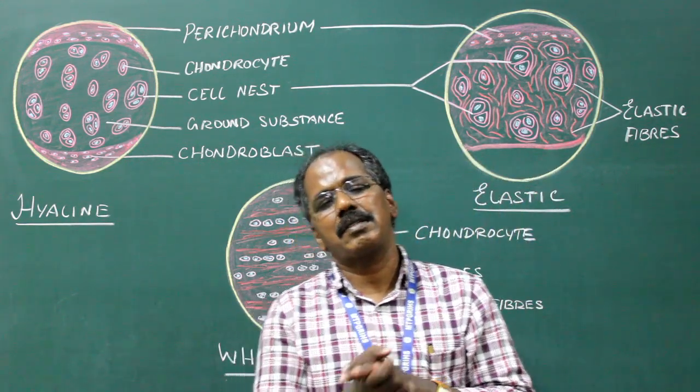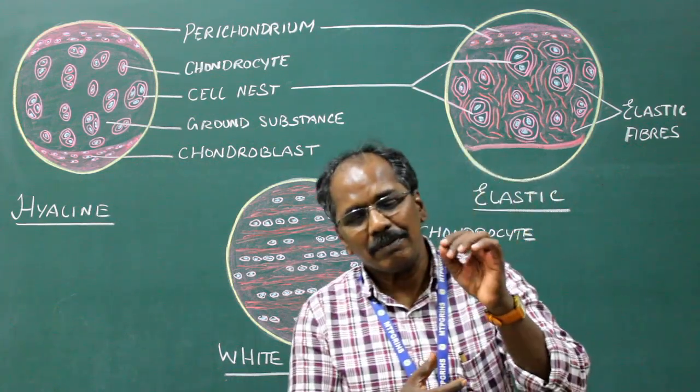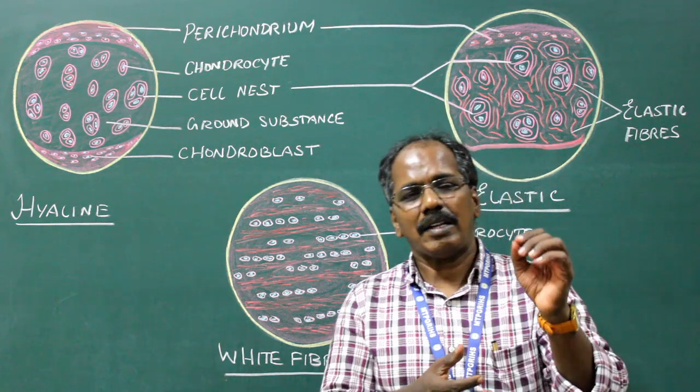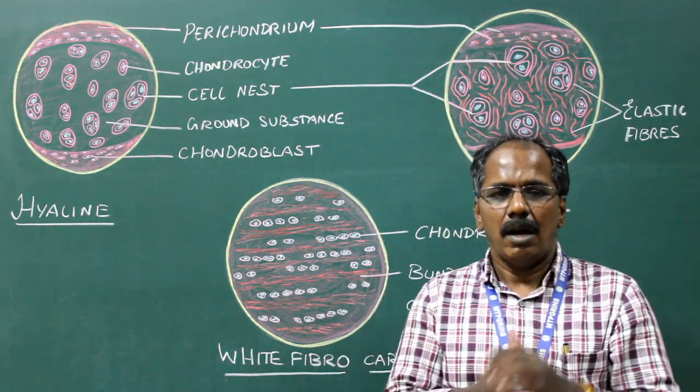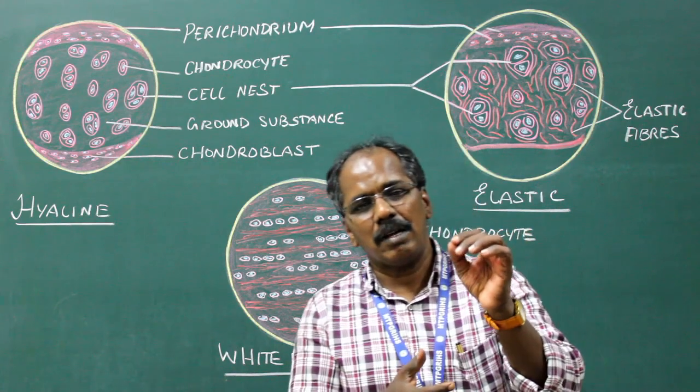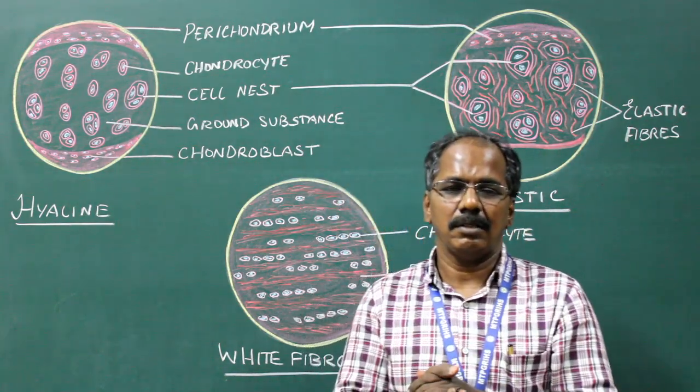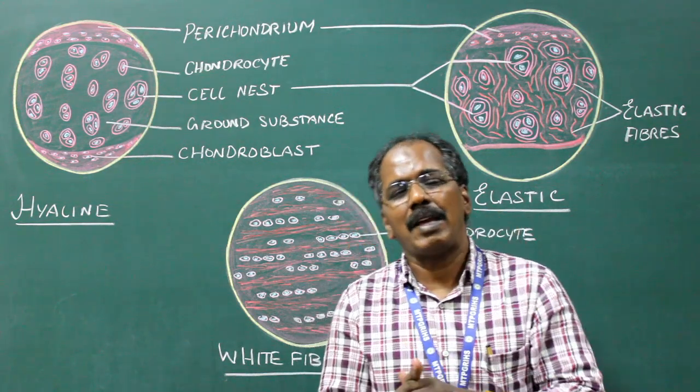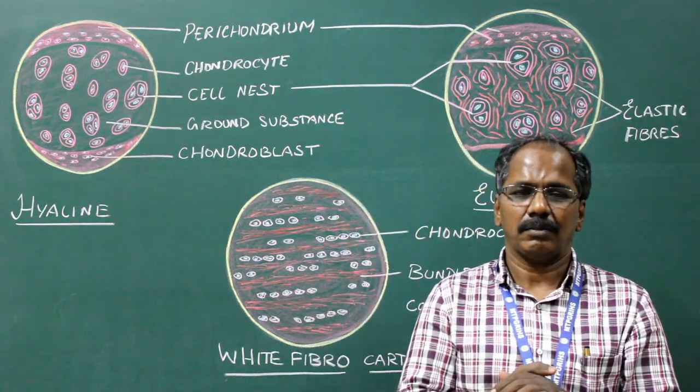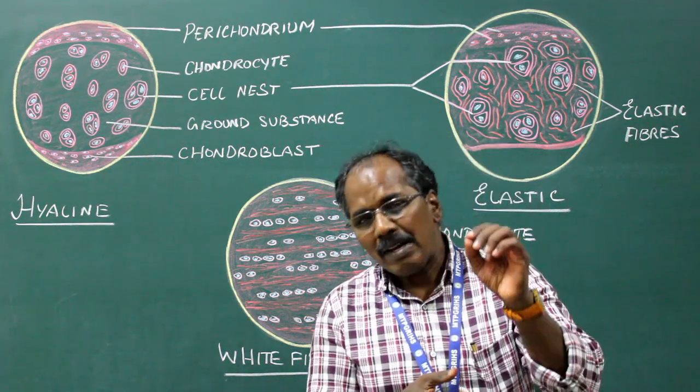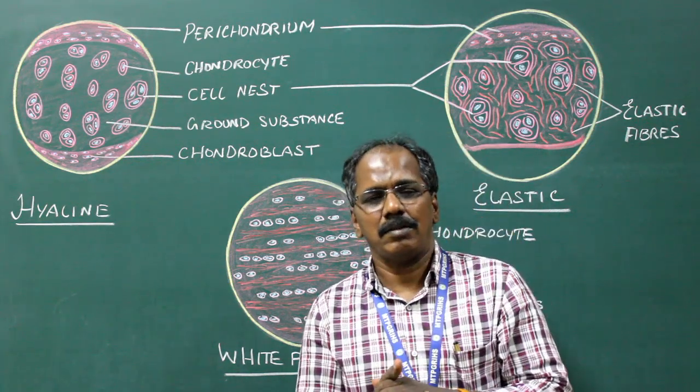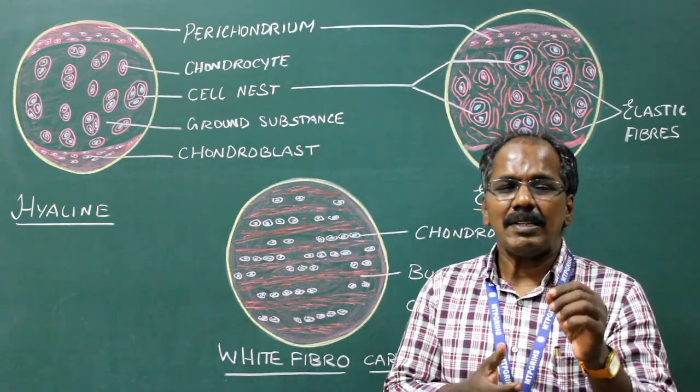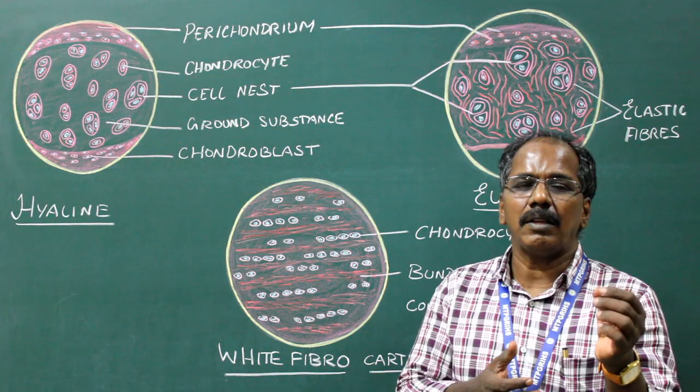General features: Cartilage is derived from mesoderm. The cells of the cartilage are known as chondrocytes. Immature cartilage cells are known as chondroblast. With increasing age, it tends to become calcified. It is avascular and alymphatic. Immigration of cartilage by blood vessels results in calcification and death of cartilage.